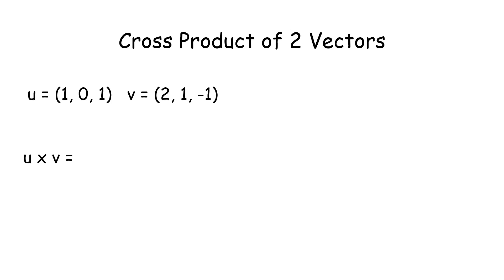So the cross product of u and v is given to us as, I know this looks like a lot, but we'll go through it one by one.